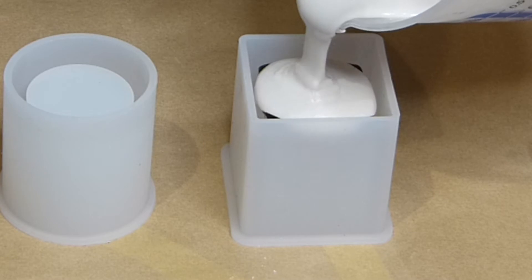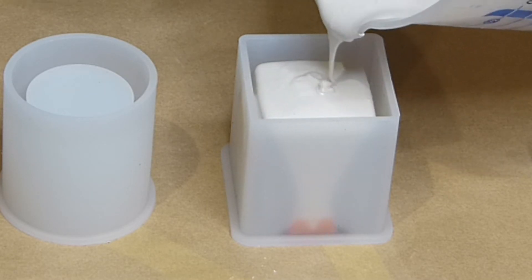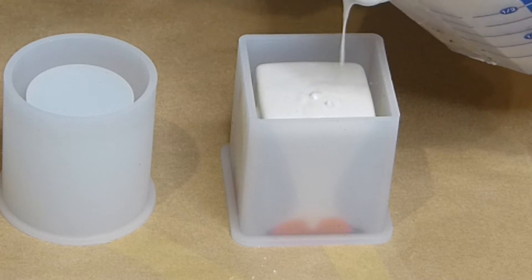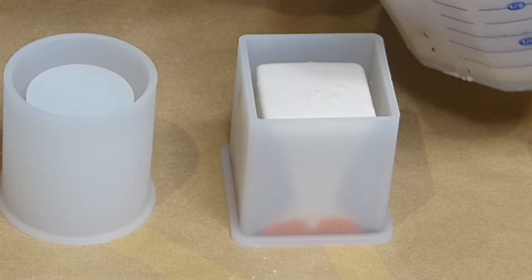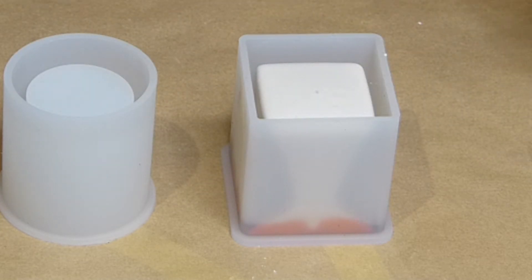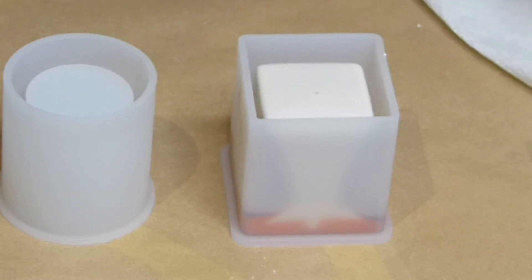And then I pour a little Jesmonite. The Jesmonite has this particularity that it pushes the alcohol ink on the sides. And then we're going to make layers like that.